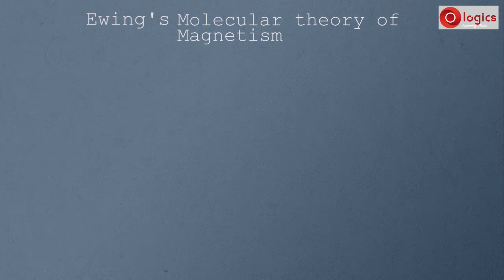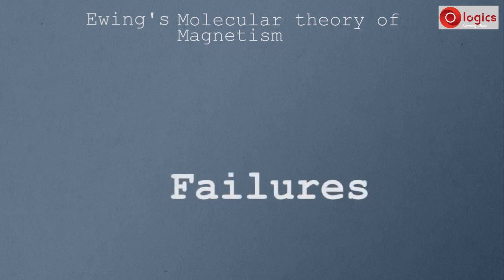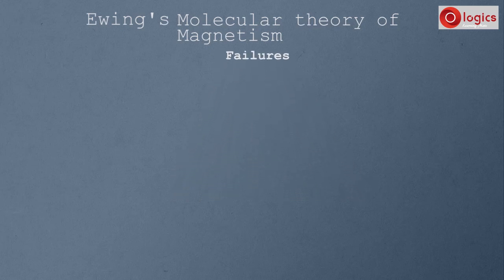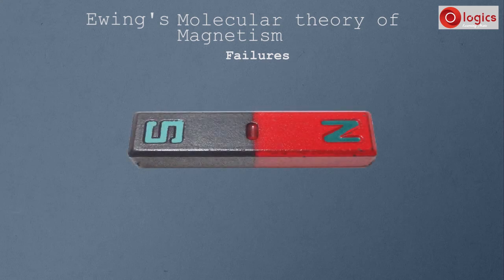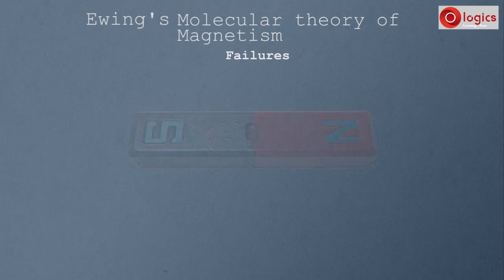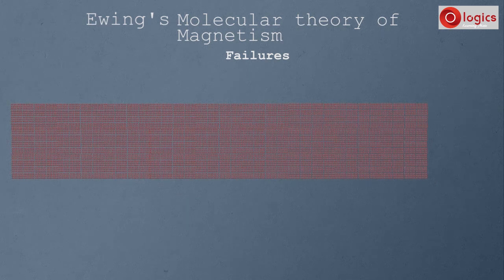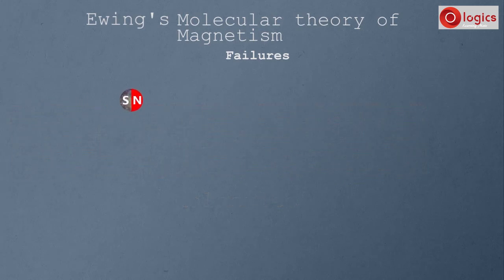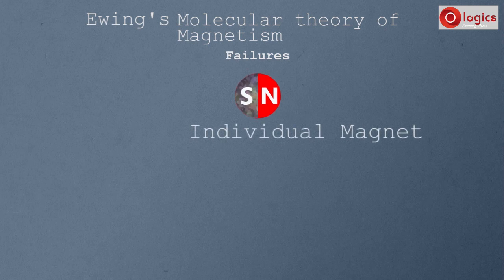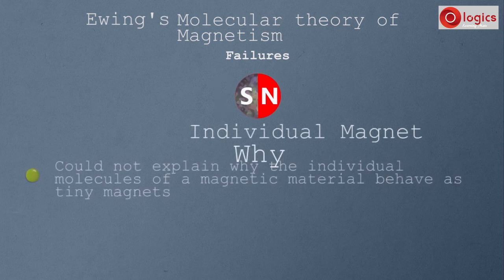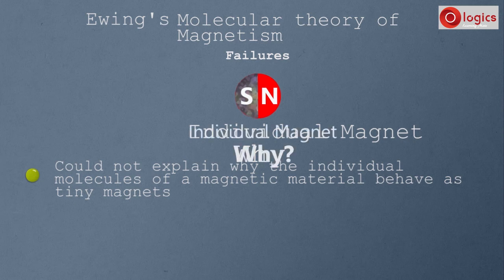Ewing's molecular theory of magnetism failed to explain some properties of magnets at the molecular level. When a magnet is broken into tiny pieces again and again, we reach a point where the pieces cannot be broken further — these are molecules. Ewing's theory states that these tiny molecules themselves act as individual magnets, but it could not explain why the individual molecules of a magnetic material behave as tiny magnets.